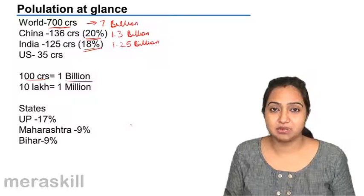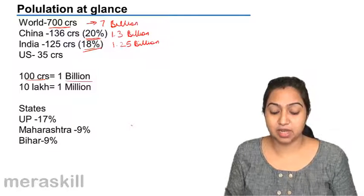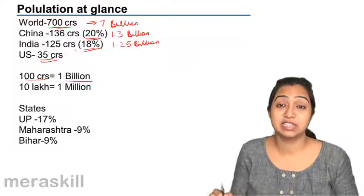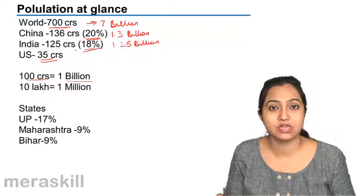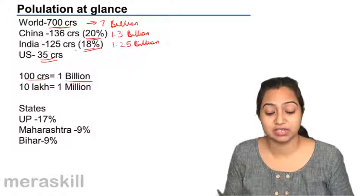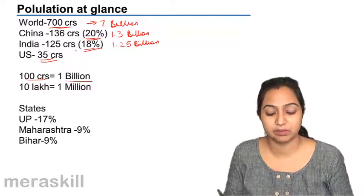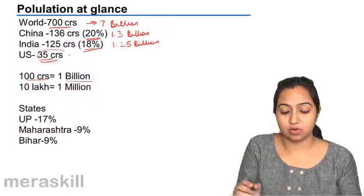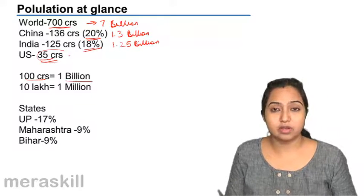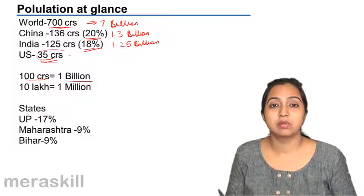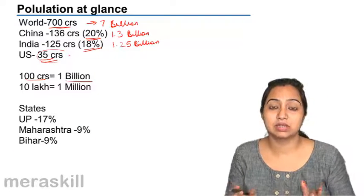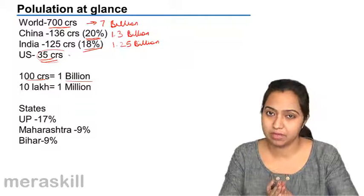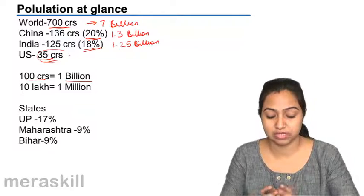The US is the third most populated country with a population of merely 35 crores. You can see the difference between the second and the third most populated country — it is just 35 crores. So 100 crores is 1 billion; just in case you come across figures in billion, do not get confused. We are 1.25 billion people or 125 crores.